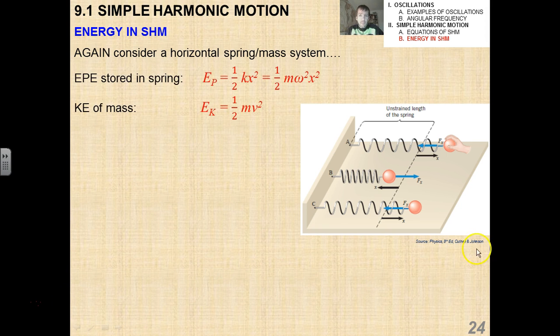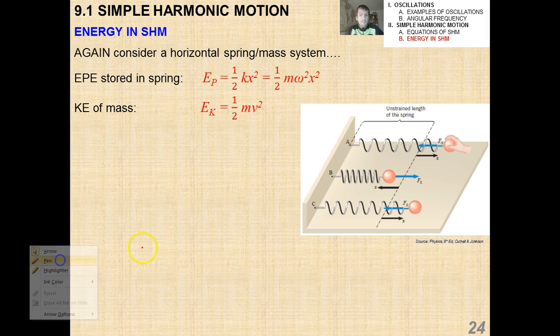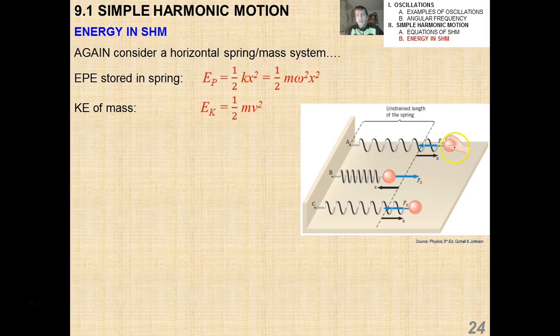Now, if you consider the case of a horizontal spring on a frictionless tabletop, that mass has basically two different kinds of energy associated with it. One is the kinetic energy, which is one-half mv squared, and we're going to call this E sub k. The other has to do with the elastic potential energy stored in the spring. And we saw before that elastic potential energy is one-half kx squared.